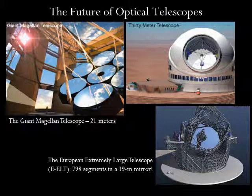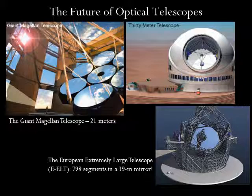Larger telescopes are in the planning or construction stages. The Giant Magellan Telescope will have six 8.4-meter mirrors, giving it an effective diameter of 21 meters. The 30-meter telescope is also in the planning stages. The 39-meter European Extremely Large Telescope, once built, will be located in Chile. Astronomers hope it will be ready sometime in the 2020s.